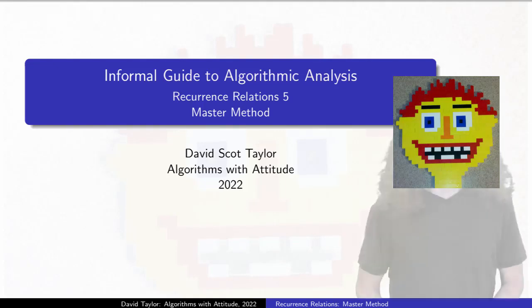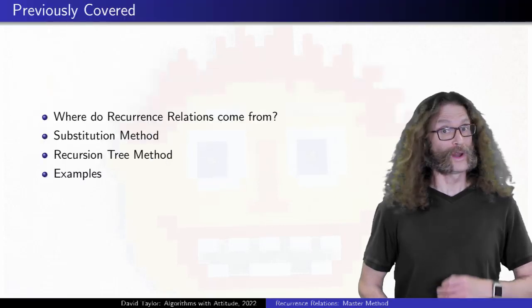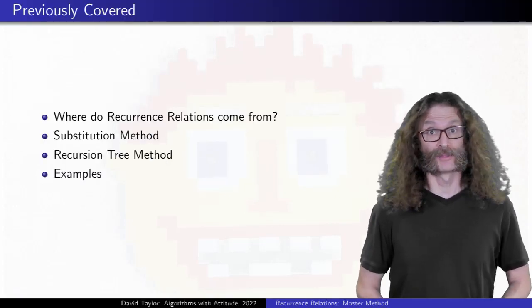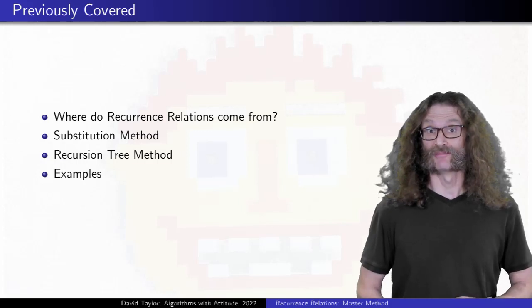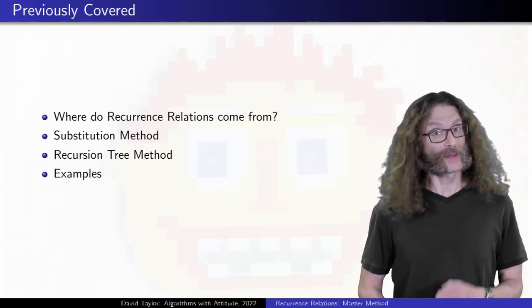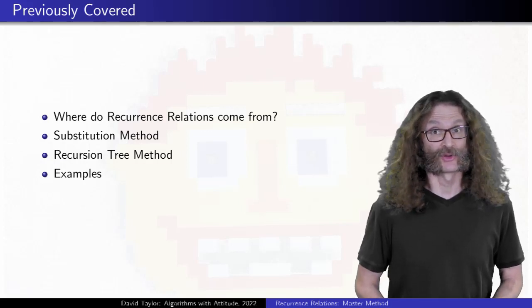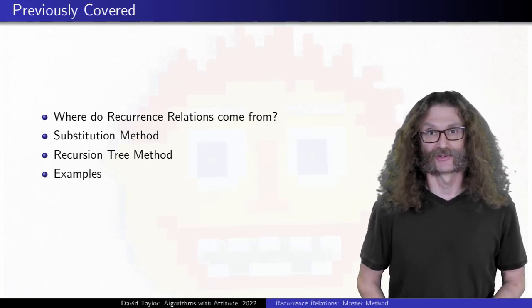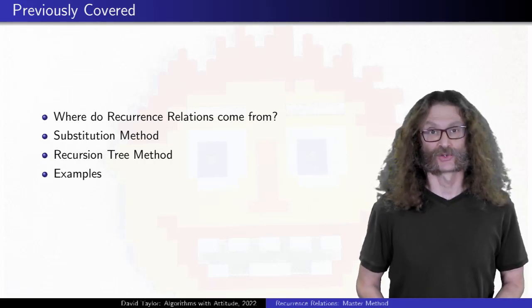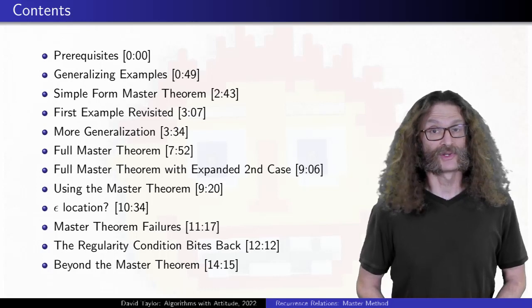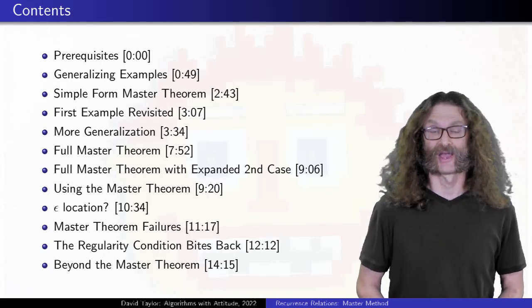This video is the fifth in a series on recurrence relations. The previous videos cover where recurrence relations come from in recursive programs, the substitution and recursion tree methods for solving them. Right before this one we went over three recurrence relation examples that were similar but had slightly different analysis. This video starts right where that one ends, continuing it.